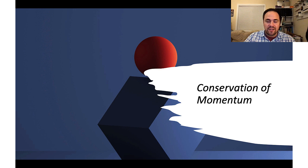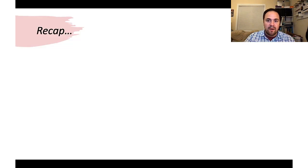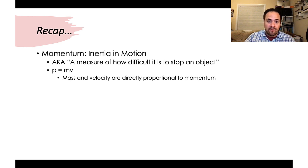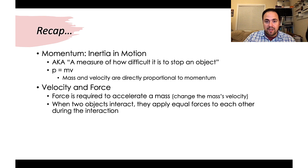We're going to talk about conservation of momentum today. First, a quick recap: momentum is inertia in motion — another way to look at it is how difficult it is to stop something. We calculate momentum as the mass of the object times its velocity. Something not moving has zero momentum. Mass and velocity are both directly proportional to momentum.